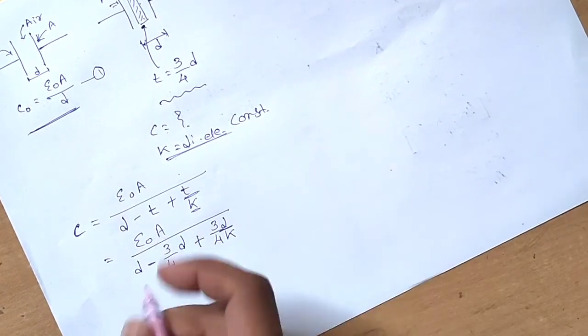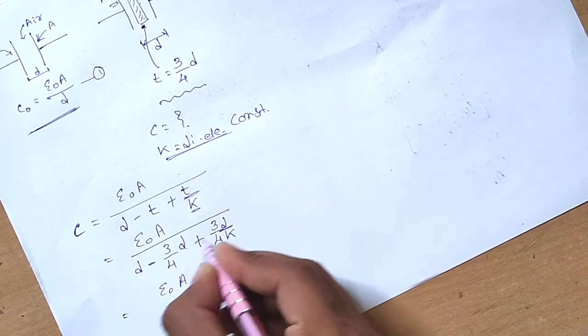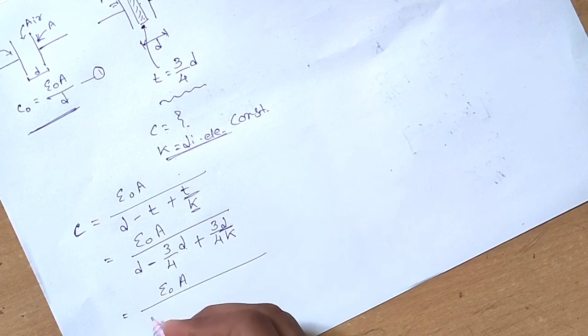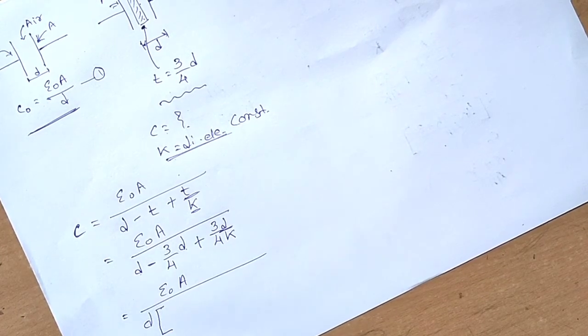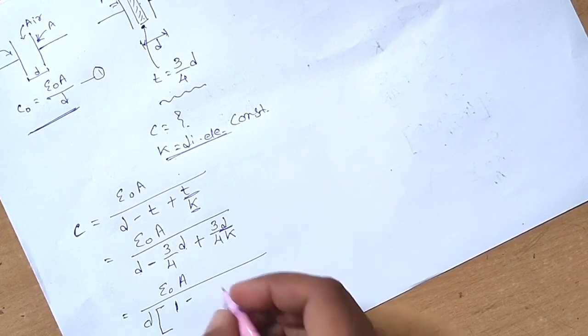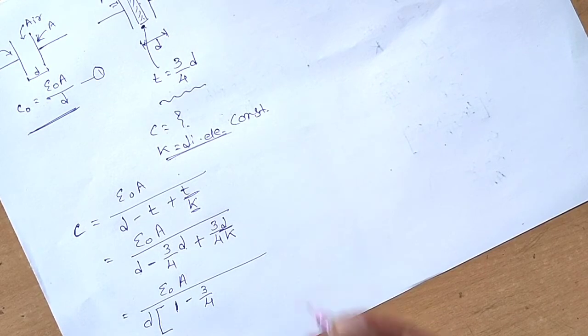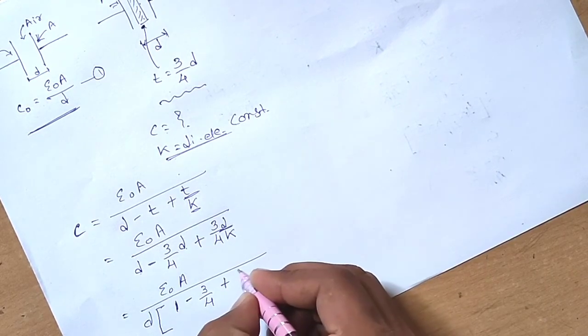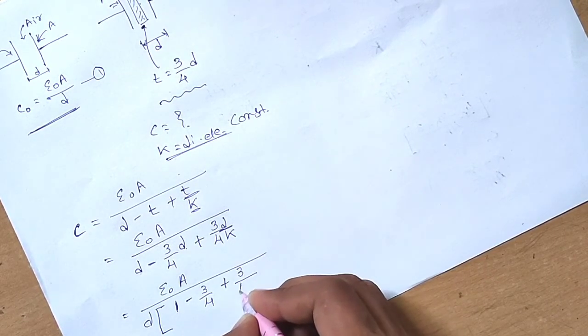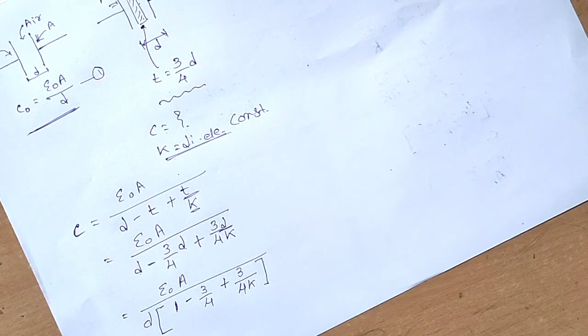Taking d common from the denominator, what's inside the bracket? It becomes 1 - 3/4 + 3/(4k). Now we have to take the LCM.